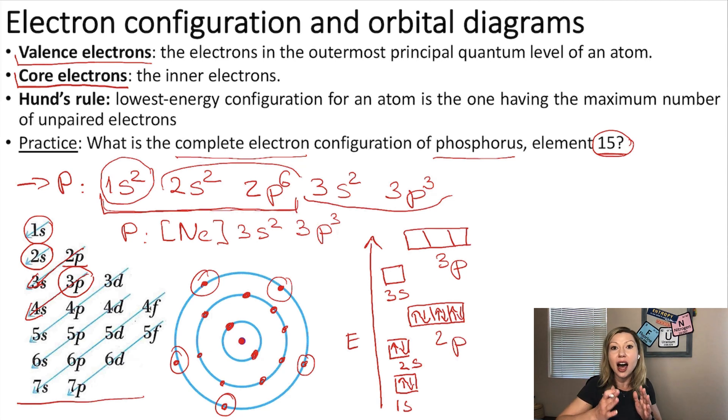Notice that I filled up the boxes first with one arrow and then added the second one. This is because of Hund's rule. It tells us the lowest energy configuration for an atom is the one having the maximum number of unpaired electrons, which makes sense. Think about it. If you have a huge house with three bedrooms in it, then if it's just the two of you living in there, you don't want to move into one bedroom, you are going to want to have your separate bedroom. Similarly, electrons want to be alone on each of the orbitals first. But when there is not enough space, they are going to move in together and share an orbital.